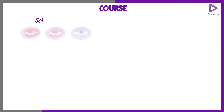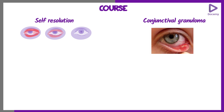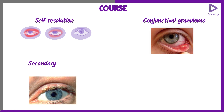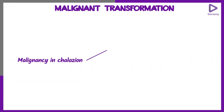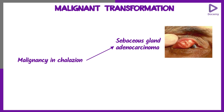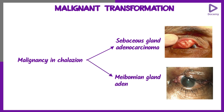Rarely, it can go for self-resolution in the case of a small chalazion. Sometimes it can cause a conjunctival granuloma appearing as a swelling on the conjunctival side. Other complications include secondary infection, calcification, and malignant transformation. The malignancy expected in chalazion is sebaceous gland adenocarcinoma or meibomian gland adenocarcinoma.